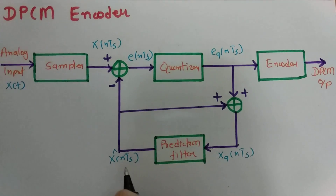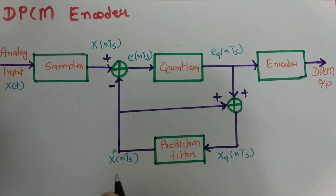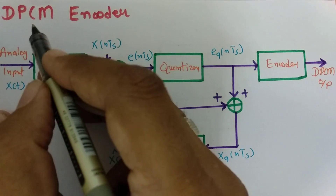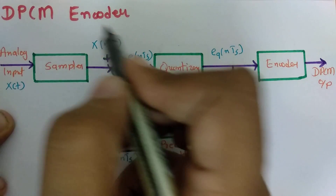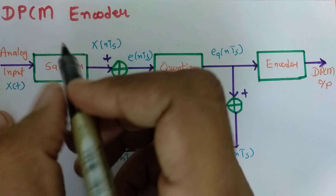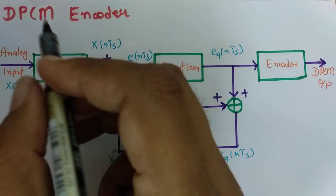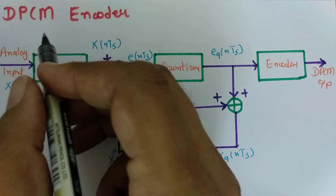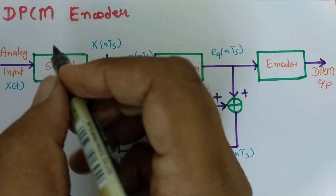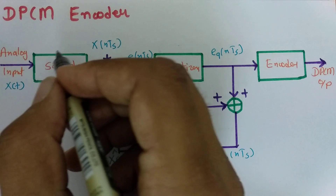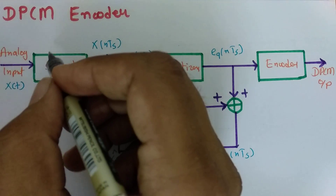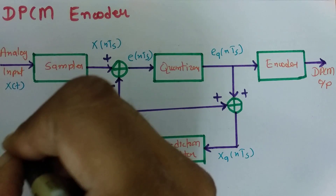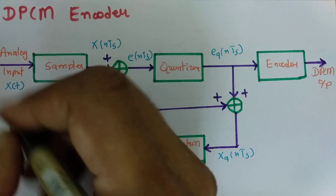Welcome to the Digital Communication Playlist. In this session, I will be explaining DPCM — Differential Pulse Code Modulation — Encoder and Decoder. First I will explain the DPCM Encoder, in which we will generate the DPCM signal, and after that I will explain how to decode that signal using the DPCM Decoder. So let us begin this session with the DPCM Encoder.